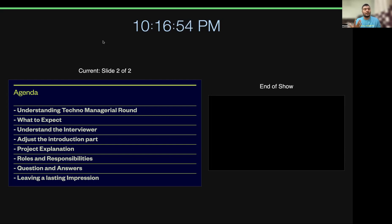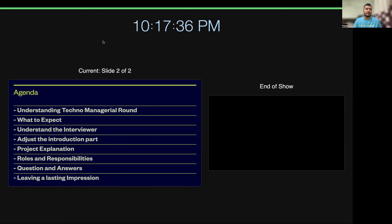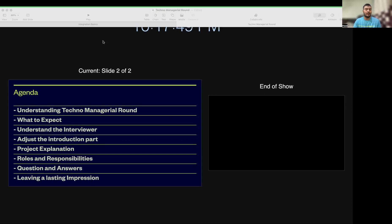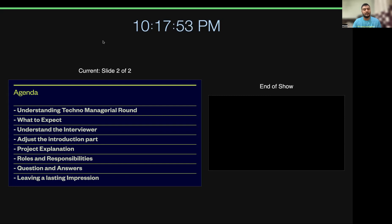Whereas if the interviewer is a project manager not very actively involved in technical details, there is no point explaining trigger frameworks or design patterns. In that case, you can explain how delivery works, how you handle agile methodology, the different project phases, how testing works, deployment mechanisms, and problems you face in deployment. Depending on the interviewer, you can modify your answers to enhance your chances of getting selected.